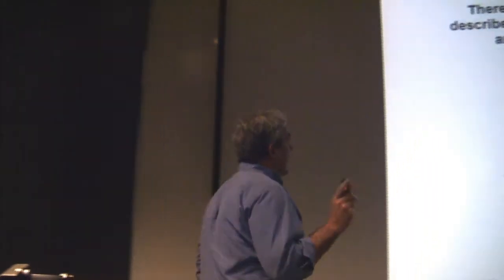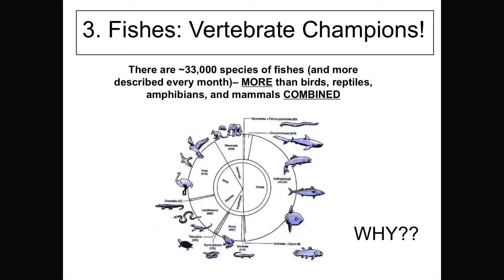Number three. Here's where we get into more of the biology. Why are fish so amazing? Number one reason. This shows the percentage, the numbers of fish species relative to all other vertebrates. There are around 33,000 species of fish. There's more described every month. There are more species of fish than all other vertebrates combined. Birds, reptiles, amphibians, mammals, including us, humans.